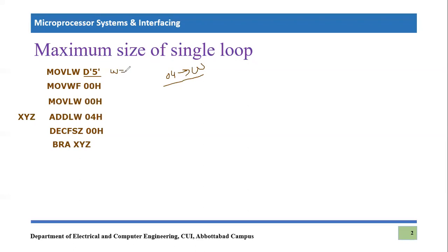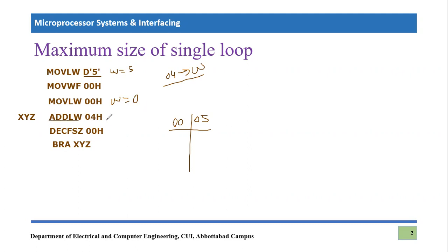First, we execute 'move literal to working 0x05', so W becomes equal to 5. Then 'move working file 0x00' stores that value into file register 0x00, so register 0x00 now holds 0x05. Next, we clear W with 'move literal to working 0x00', making W equal to zero. Then we repeatedly add 0x04 to the working register using 'add literal to working 0x04', so W becomes 0x04.